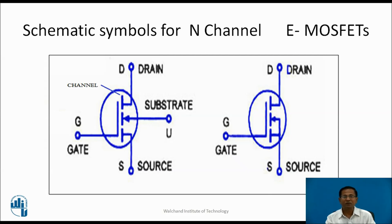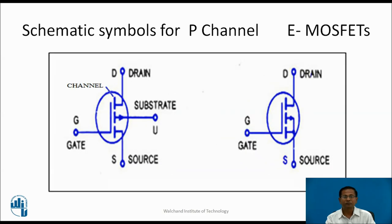These are the schematic symbols for the N-channel E-MOSFET. Source, Gate, and Drain are the three terminals. The channel is shown above, and the arrow represents the direction of majority charge carriers from source to drain. For P-channel E-MOSFET, compared with N-channel, there is only one difference: the direction of the arrow — the arrow is outward.